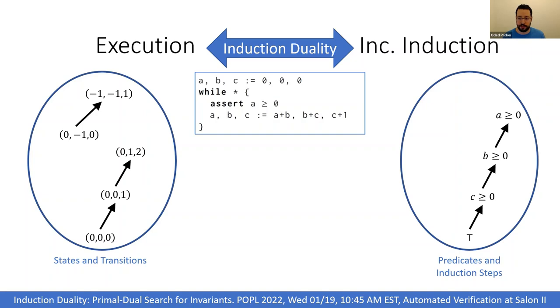This notion of incremental induction leads to a graph of predicates and induction steps. Similar to the states and transitions graph, this graph can also include induction steps between predicates that are not invariants.